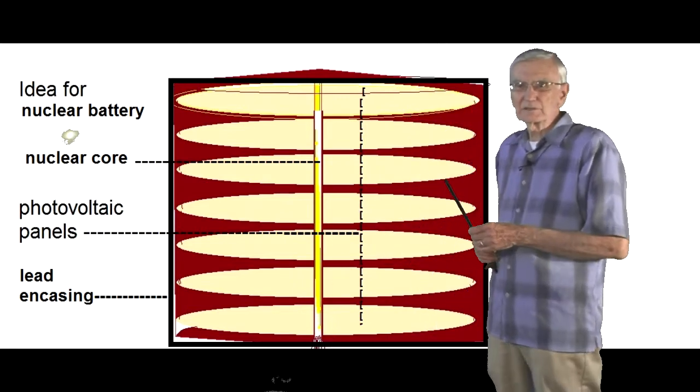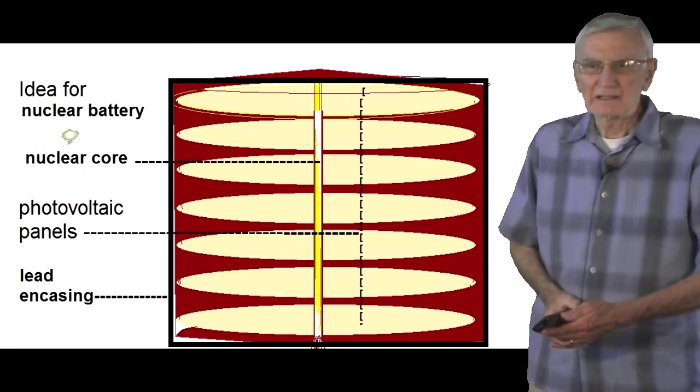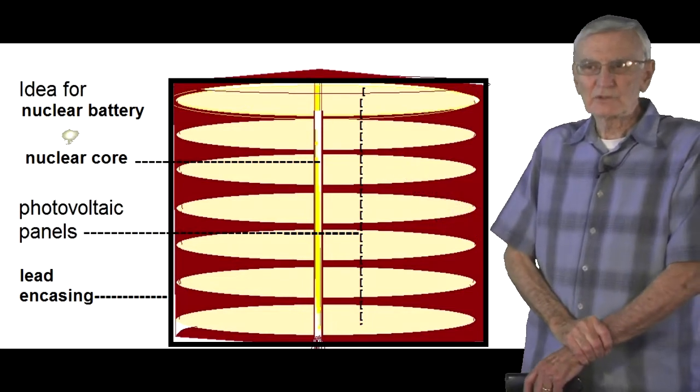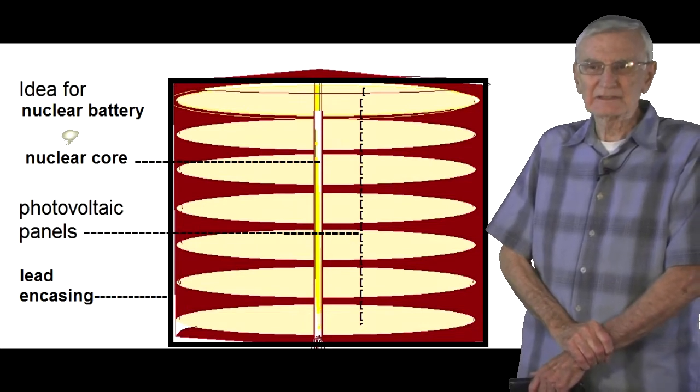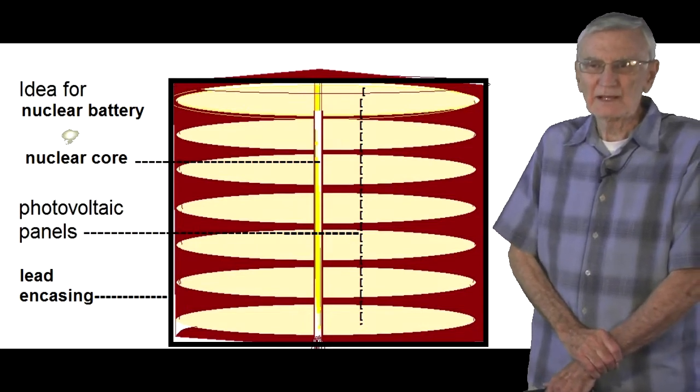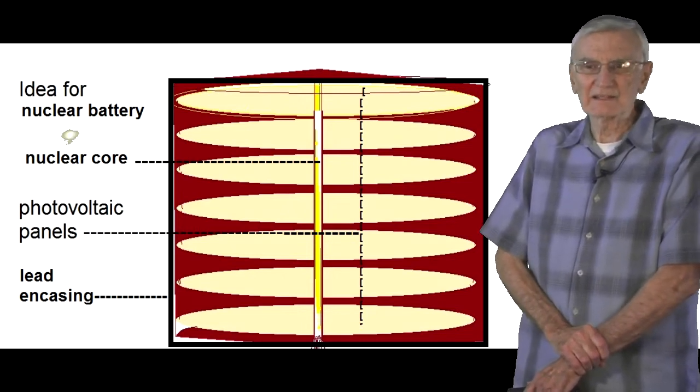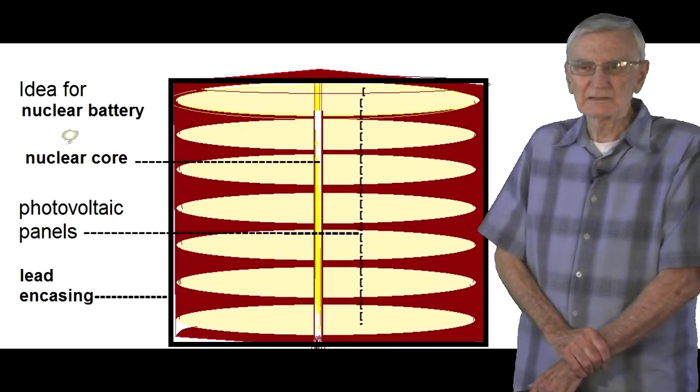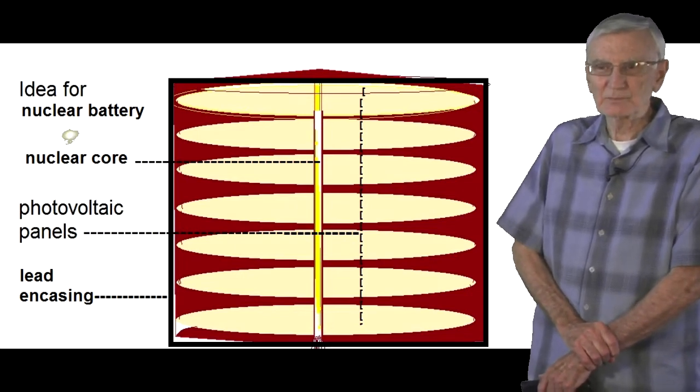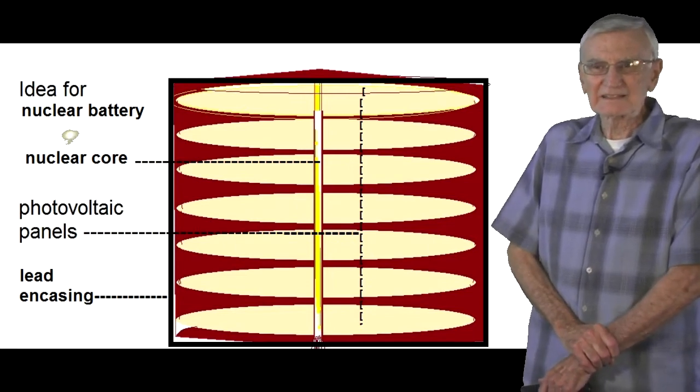It has a nuclear core in the center and photovoltaic panels. These very thin round discs or panels would have photovoltaic cells on both sides, and the light from the nuclear core to both sides would create lots of light exposure. This would all be encased in a lead shielded compartment.